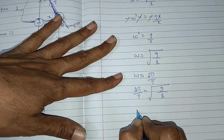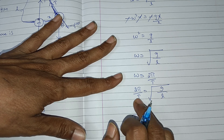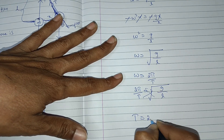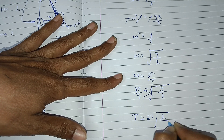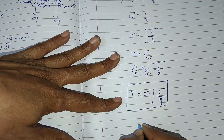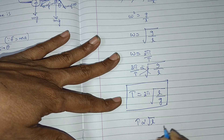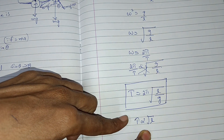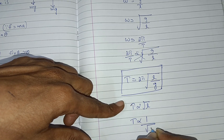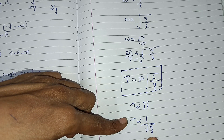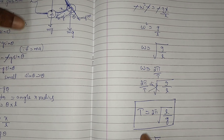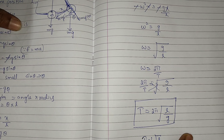By cross multiplication, T is equal to 2 pi into the square root of L divided by G. This is the equation of the time period of a simple pendulum. The time period is directly proportional to the square root of L — if the length of the pendulum increases, the time period also increases. The time period is inversely proportional to the square root of G — if acceleration due to gravity increases, the time period decreases. This is one of the important questions in the Telangana and MSAT IP examination. Thank you for watching my video.